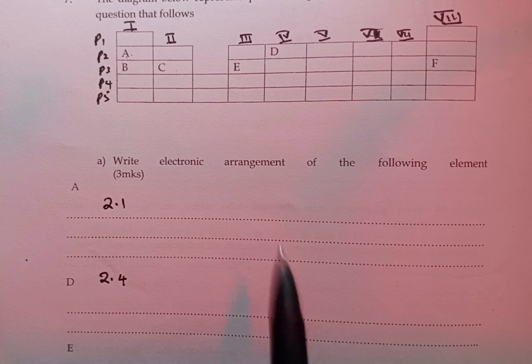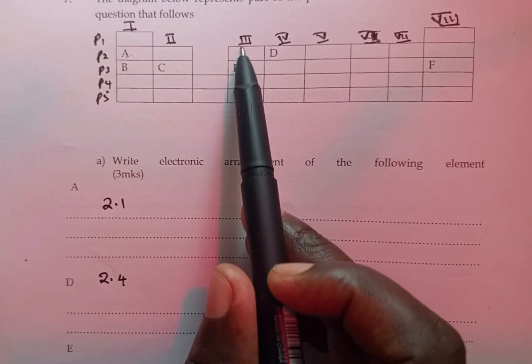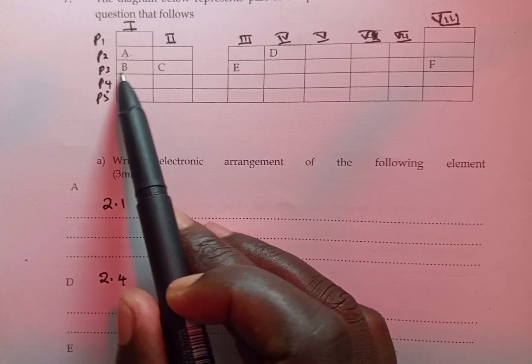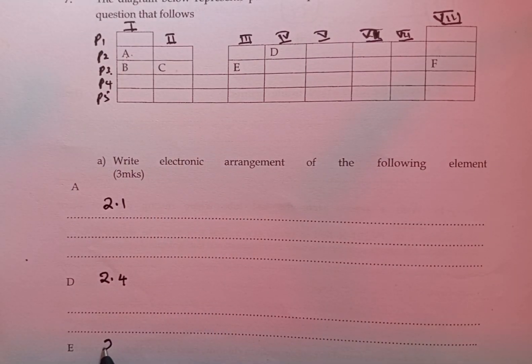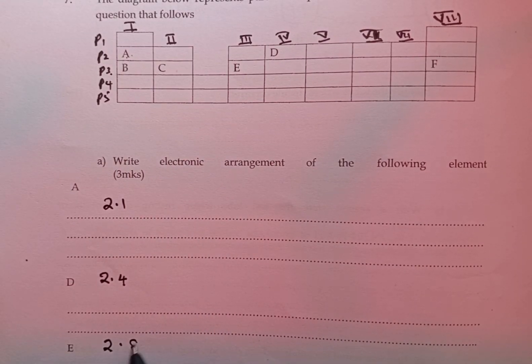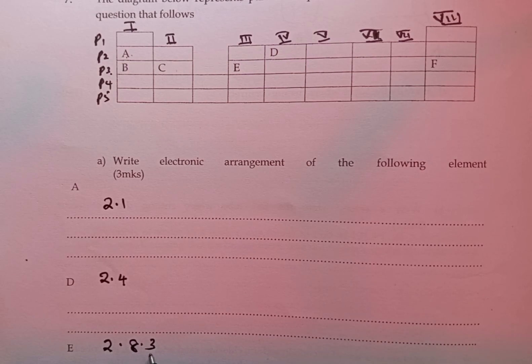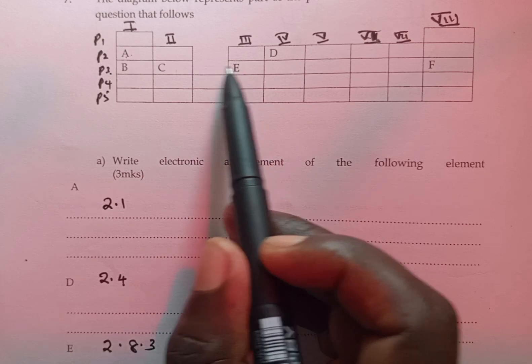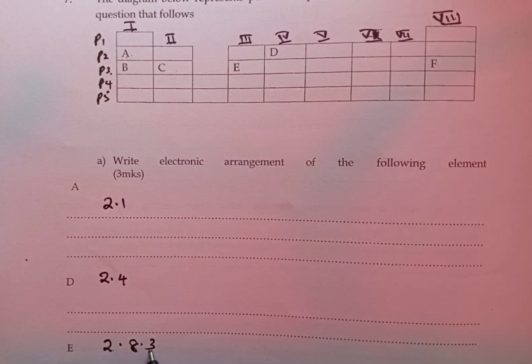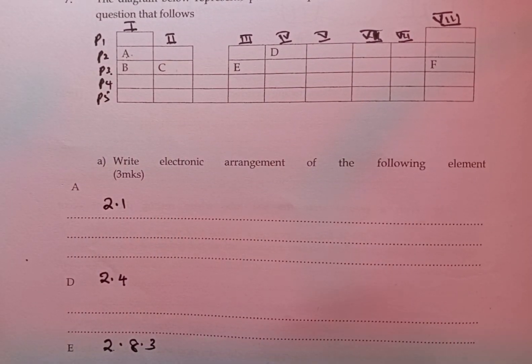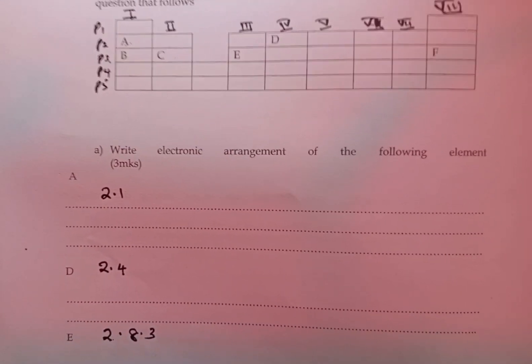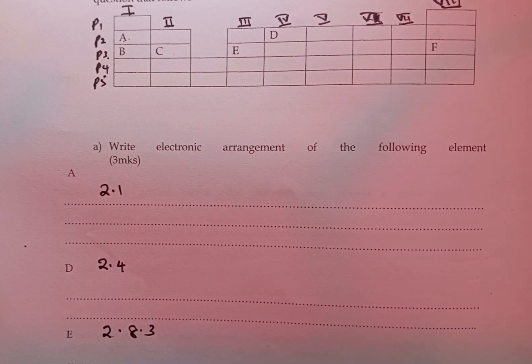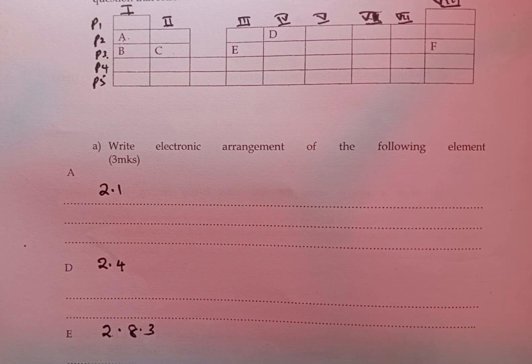Then we go to E. Element E is in group 3, period 3, meaning we are going to have three electrons in the outermost energy level, which gives us the group of this element. And since it has three occupied energy levels, that places it in period 3. That part has been answered very well.